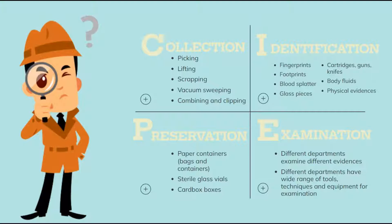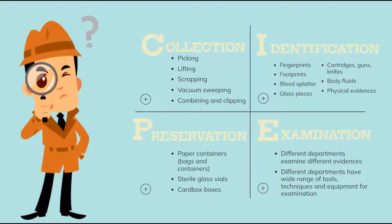Examination. All the evidence is sent to laboratories where different departments are present and the evidence is distributed. In each department, experts examine the evidence using equipment such as GCMS, chromatography, spectrophotometer, microscopes, chemical tests, and many more. After examination, the experts provide a report based on their analysis, upon which justice is provided to an individual. Always keep in mind that based on your reports one will be declared innocent or charged as a criminal, so always do your job sincerely and unbiased.